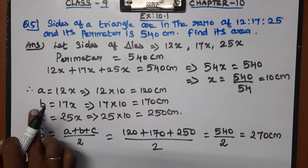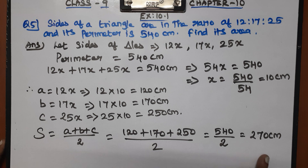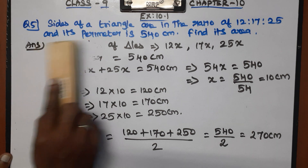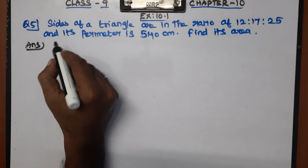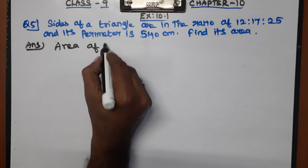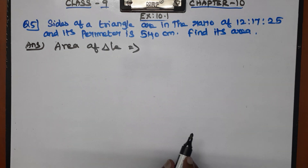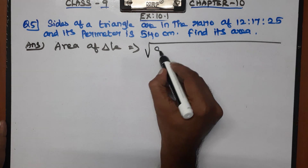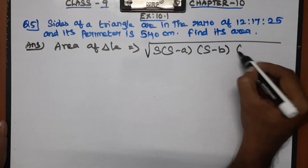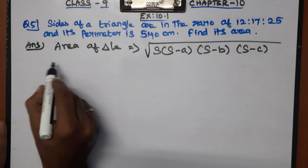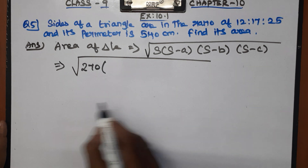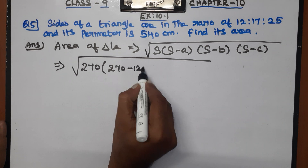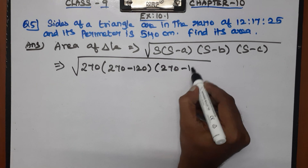We have a = 120, b = 170, c = 250 and s = 270 cm. Now we find the area of the triangle using Heron's formula: Area = square root of s into (s minus a) into (s minus b) into (s minus c), where s is the semi-perimeter.